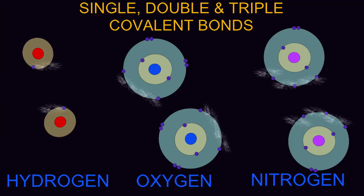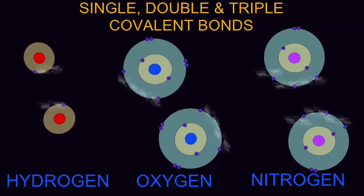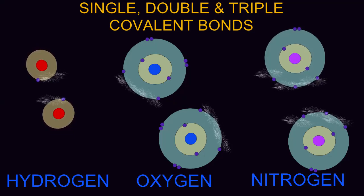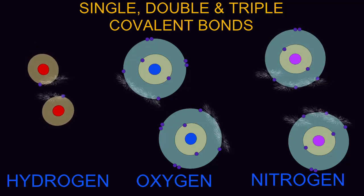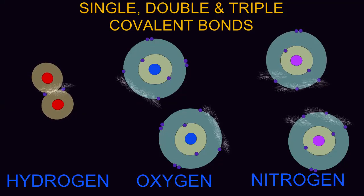This hydrogen atom has one electron in its outermost shell, but this outermost shell holds two. So this hydrogen atom needs one electron to fill its outermost shell, which is a more stable configuration.